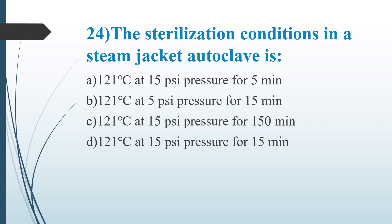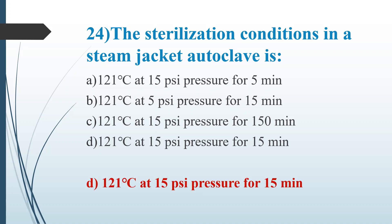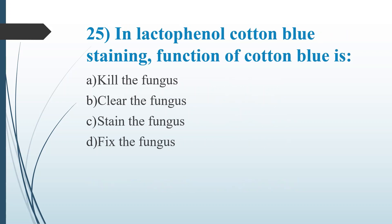Twenty-fourth question: The sterilization conditions in a steam jacket autoclave is. Option A, 121°C at 15 PSI pressure for 5 minutes. Option B, 121°C at 5 PSI pressure for 15 minutes. Option C, 121°C at 15 PSI pressure for 150 minutes. Option D, 121°C at 15 PSI pressure for 15 minutes. Answer is Option D, 121°C at 15 PSI pressure for 15 minutes.